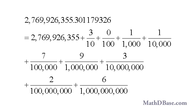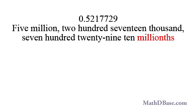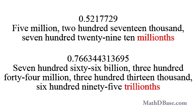The number in the place value chart can be expressed in partially expanded form by writing the part that is less than a whole in expanded form. The number is read 2,769,926,355 and 301,179,326 billionths. The number 0.5217729 would be read 5,217,729 ten millionths. And the number 0.766344313913195 would be read 766,344,313,913,195 ten quadrillionths.